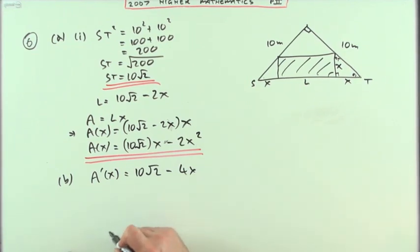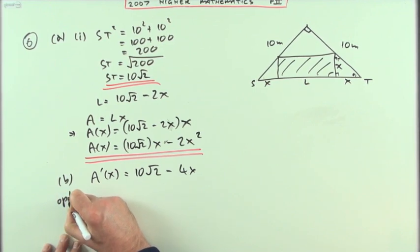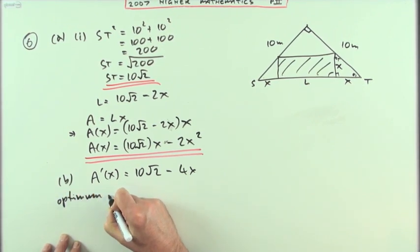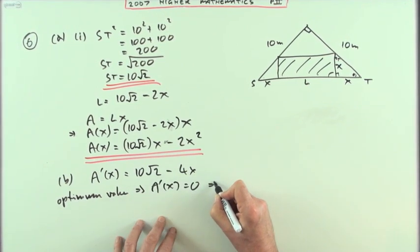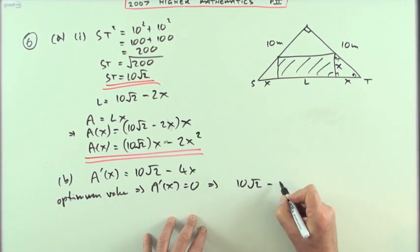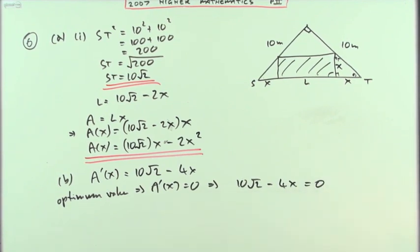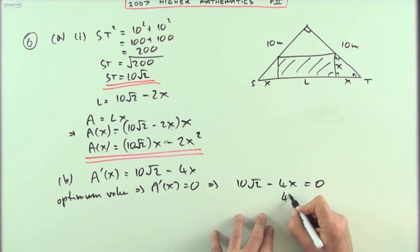And then I've got the same sort of statement I would have for stationary points, only I won't say stationary, I'll just say optimum. There'll be an optimum value if A'(x) is ever equal to zero. If 10 root 2 minus 4x is ever equal to zero, that's quite easy to solve because that just means 4x is going to equal 10 root 2.